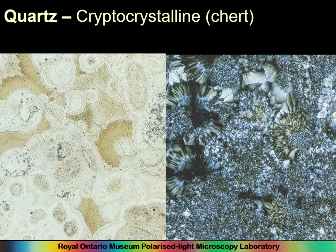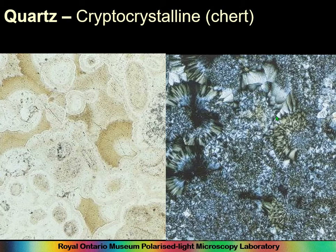Apart from macro-crystalline quartz, we have crypto-crystalline and micro-crystalline quartz. If it's crypto-crystalline, light won't pass through it. The most common type we'll find is chert. You can see all this quartz creating a felty intergrowth in plain and cross-polarized light. Chert forms from things like sponges, which have siliceous skeletons.